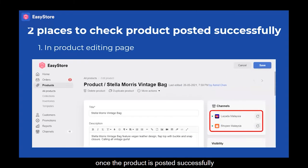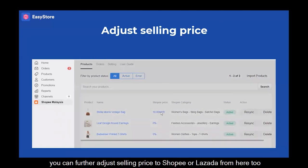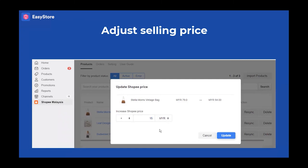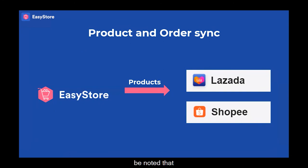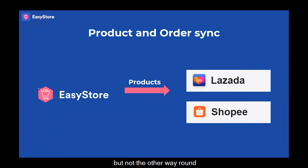Once the product is posted successfully, you can see the green dots under Channels in the product editing page, and it will show as active in the Shopee or Lazada App. You can further adjust the selling price to Shopee or Lazada from here too. Now the product is synced between your EasyStore, Shopee or Lazada. Be noted that product sync between EasyStore, Shopee and Lazada works one way — the system syncs product details only from EasyStore to Shopee and Lazada, but not the other way round.